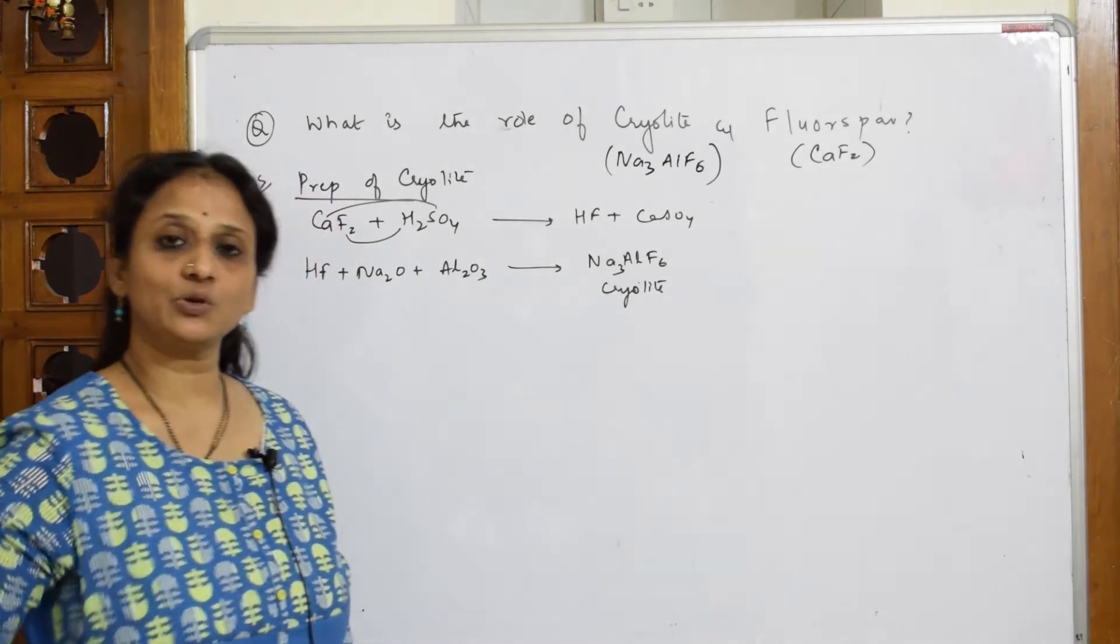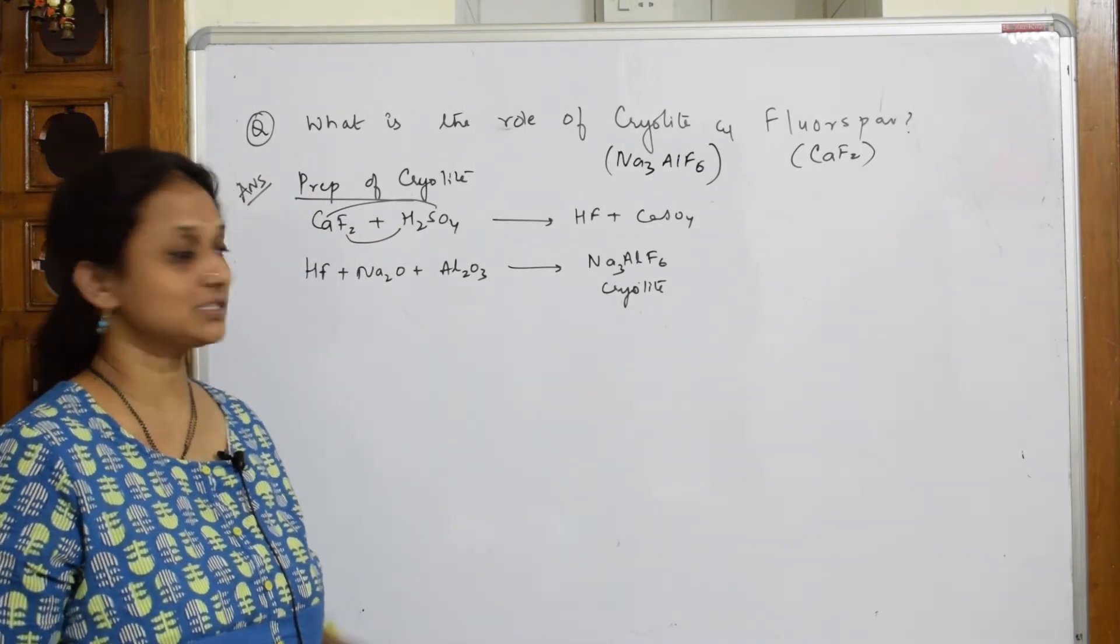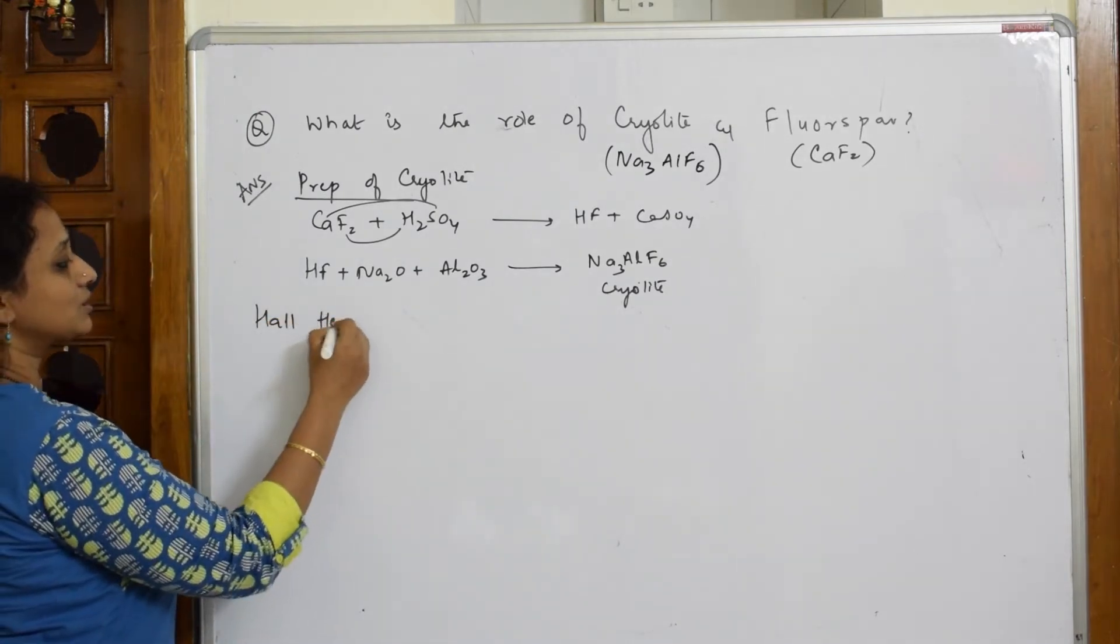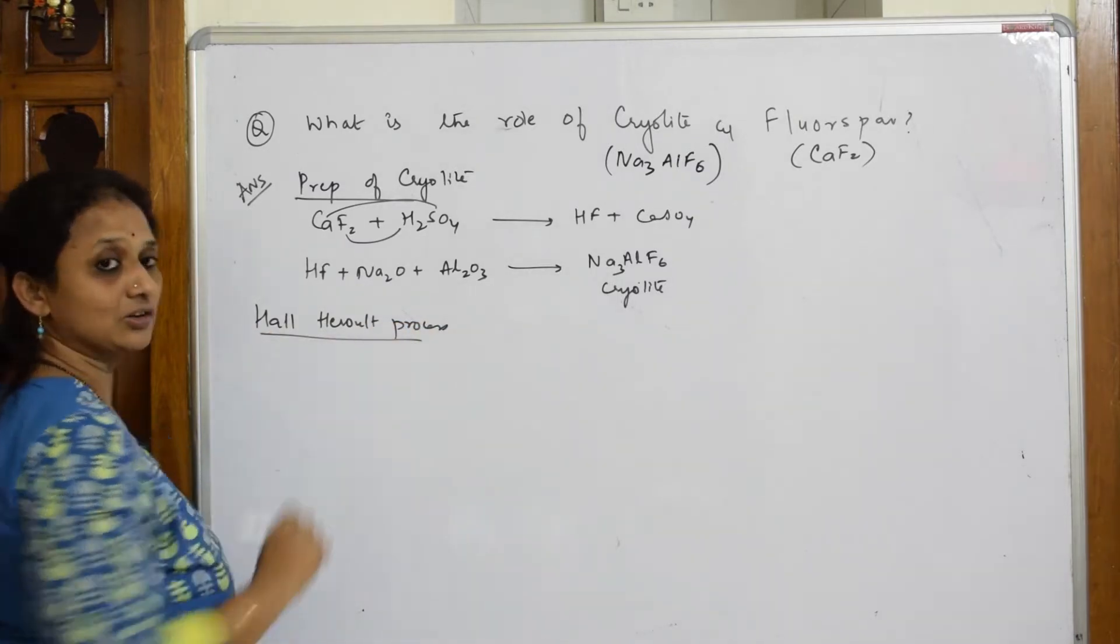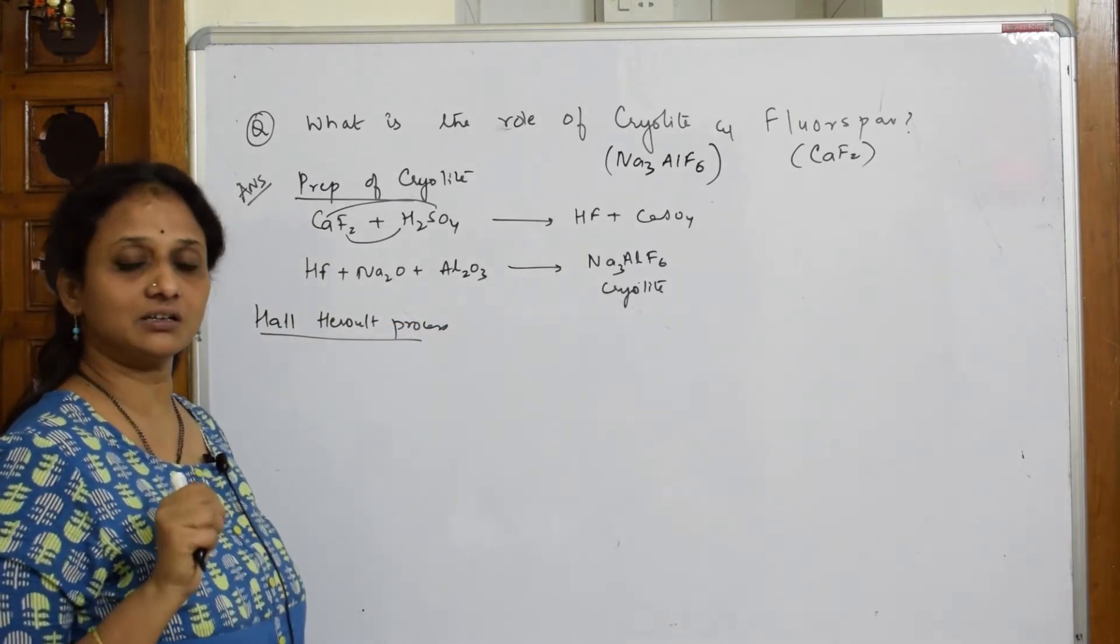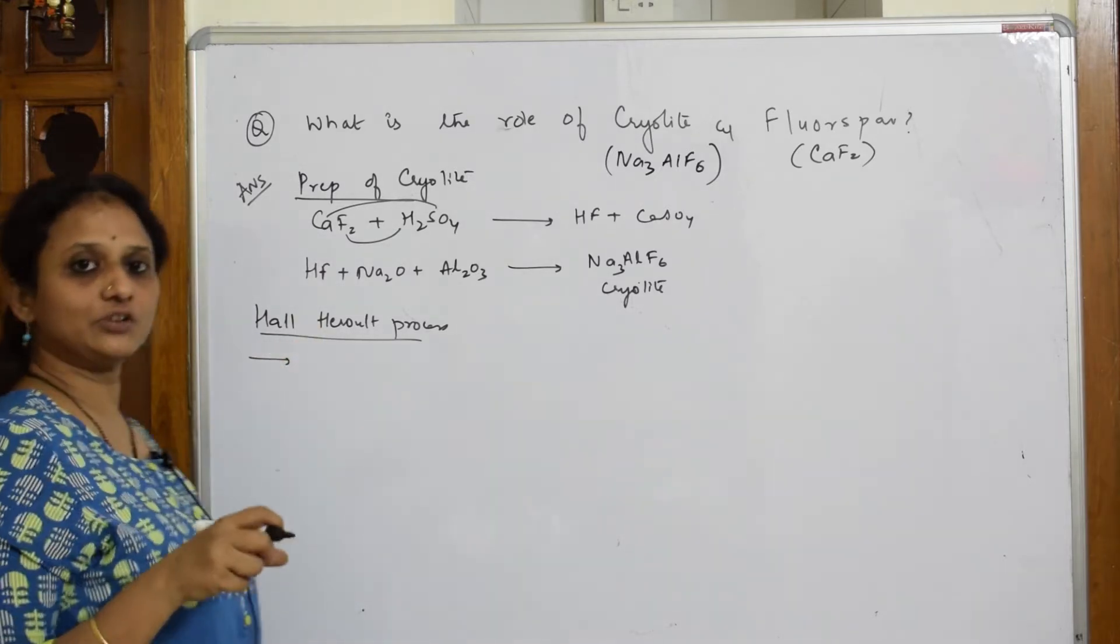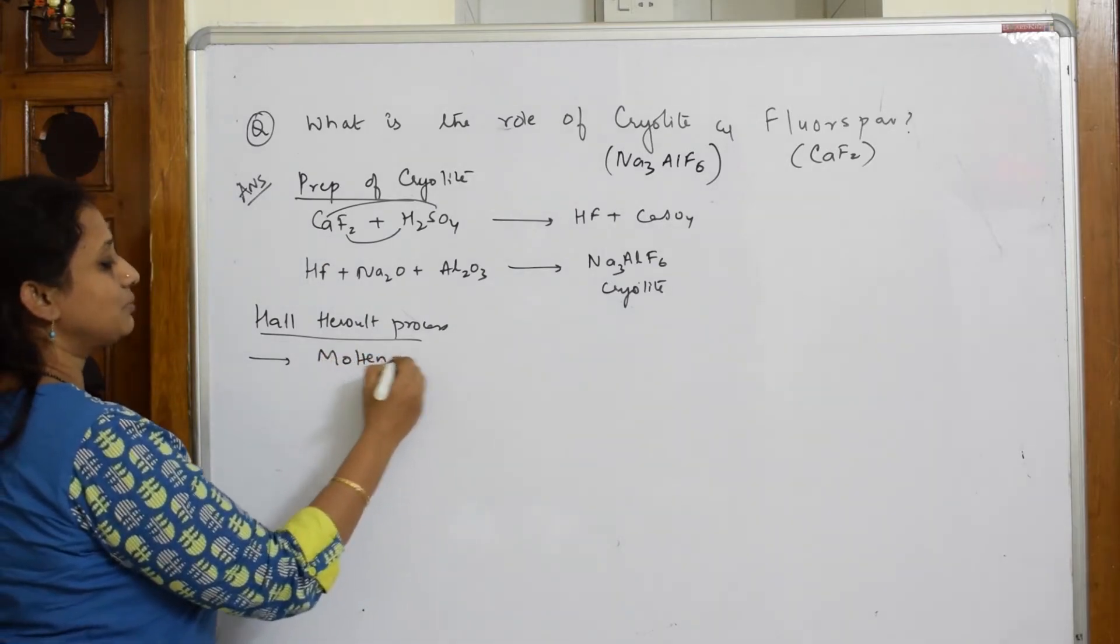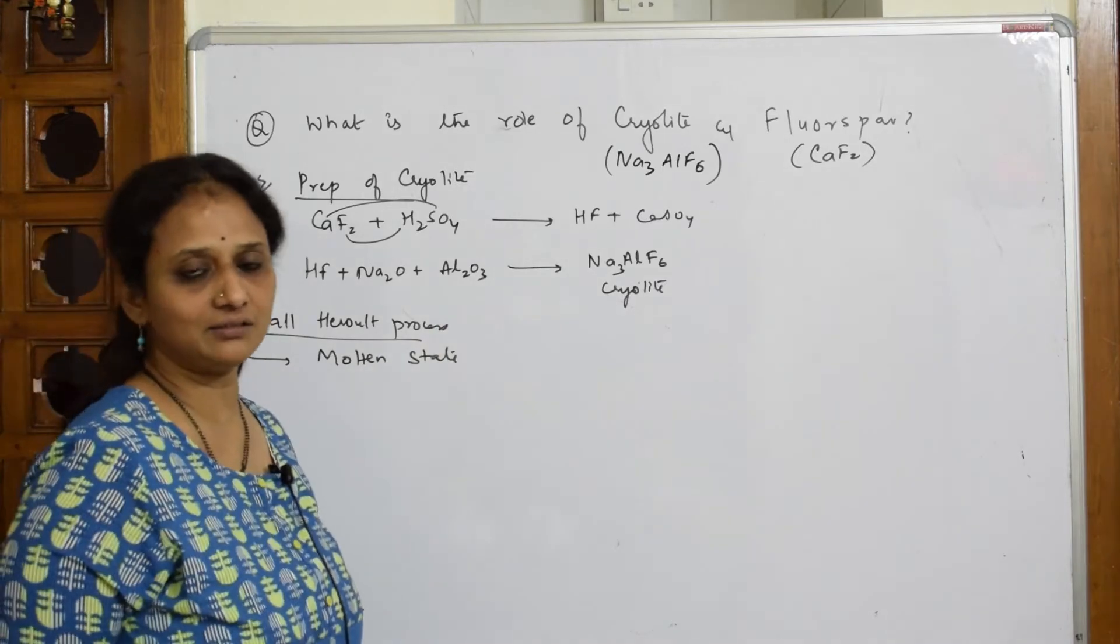Now, this cryolite, we are going to add it with aluminium trioxide or aluminium oxide in Hall-Heroult process. What does it do? In Hall-Heroult process, first important condition is the whole electrolytic cell, whichever compound you are adding, that whole electrolytic cell, the liquid, whatever electrolyte you are adding, that liquid should be in a molten state.